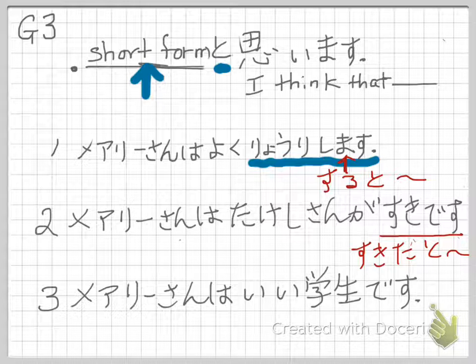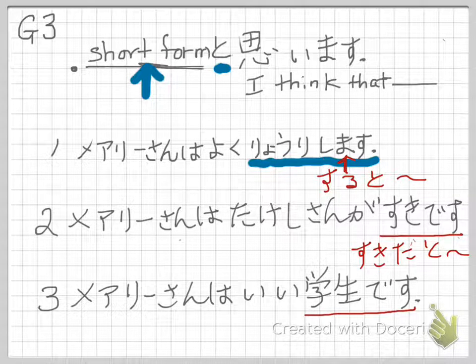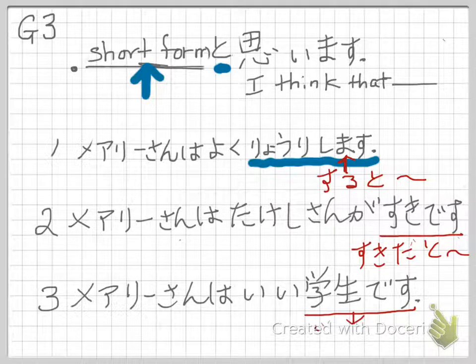How about number three? This is a noun. Mary-san wa ii gakusei desu — 'I think Mary is a good student.' So ii gakusei — this is a noun. For noun short form, gakusei desu becomes ii gakusei da. So the sentence is: Mary-san wa ii gakusei da to omoimasu.